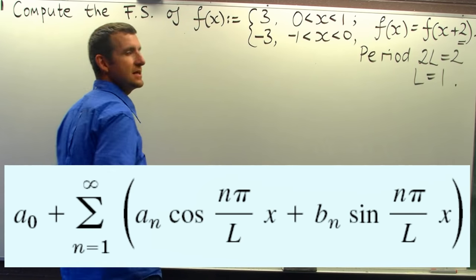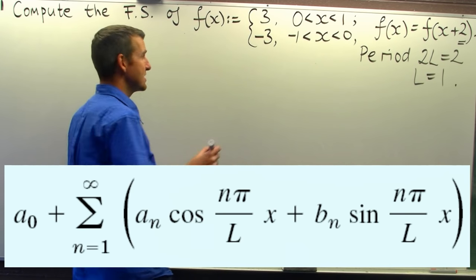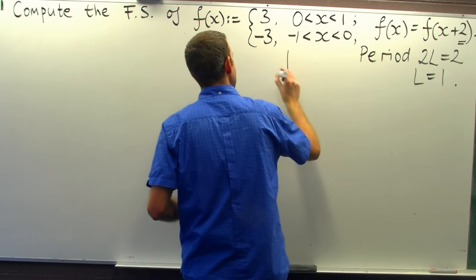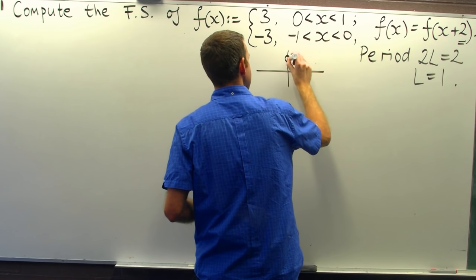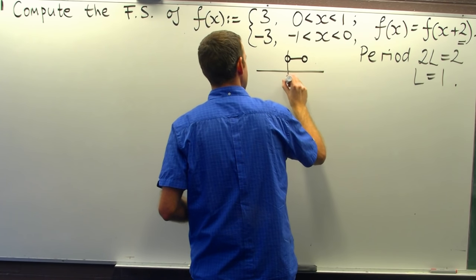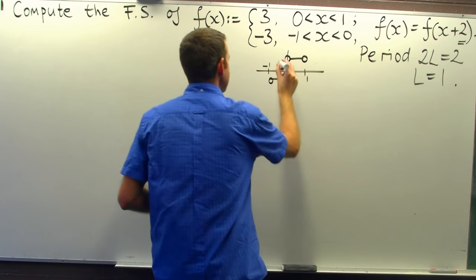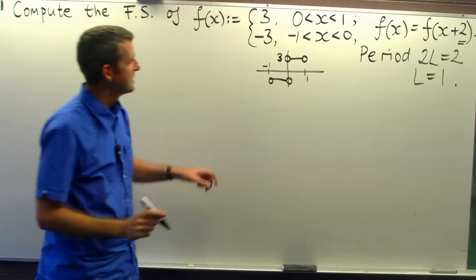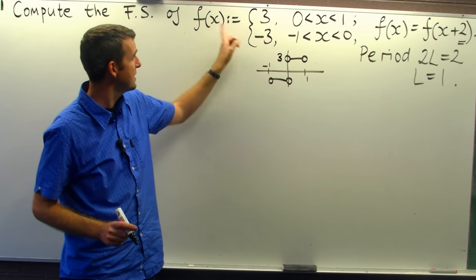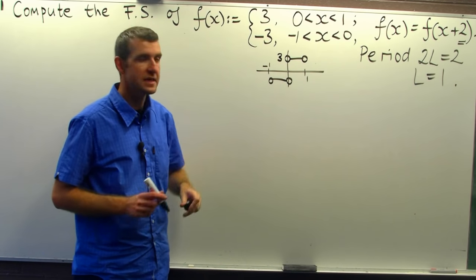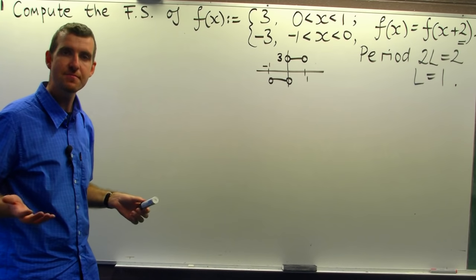Also note that the given function is odd. So this isn't drawn to scale, but the function is an odd function. Now why is that important?